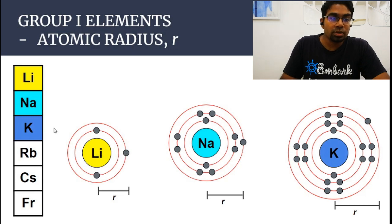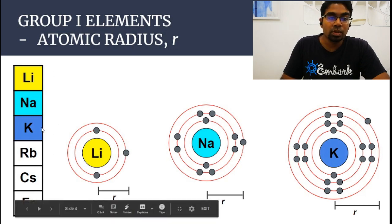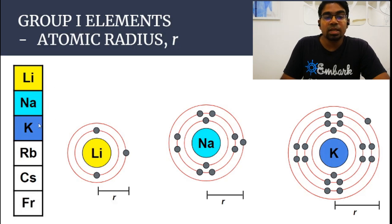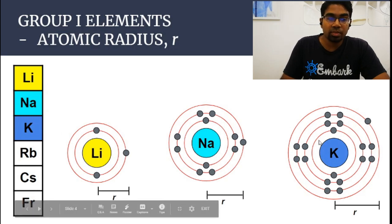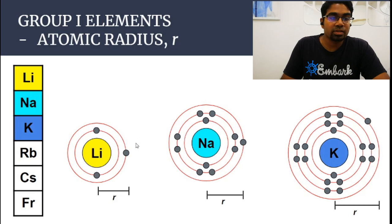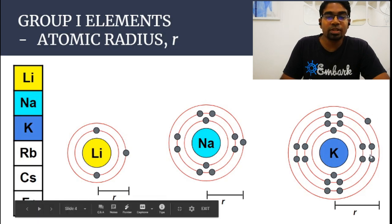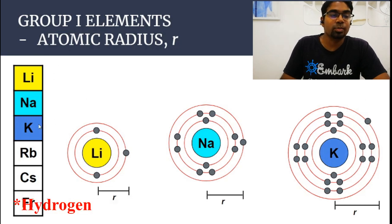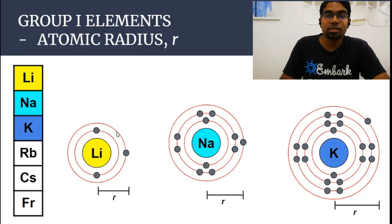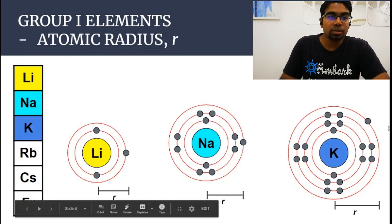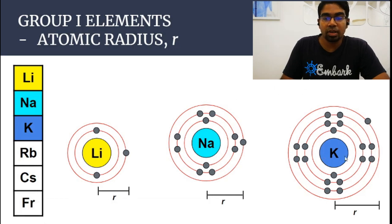As we go down the group from lithium to sodium to potassium, as the period number increases, the number of shells will also increase. Potassium is in period 4, so potassium has 4 shells. And lithium is in period 2, so there are 2 shells. The more the number of shells, the bigger the element, the bigger the size of the atom, and therefore the larger the atomic radius.